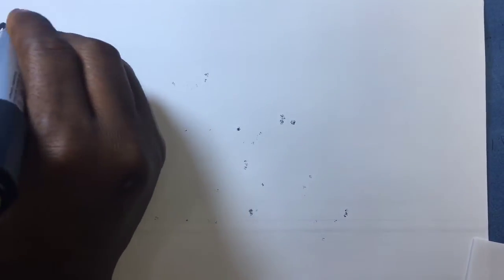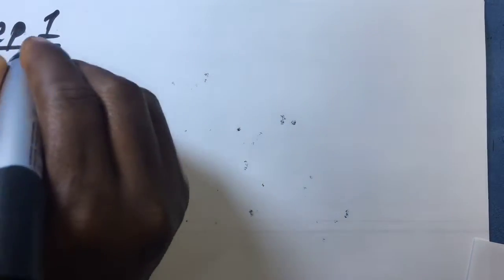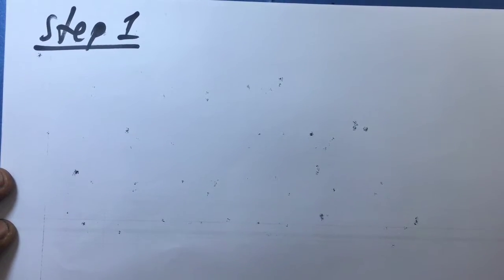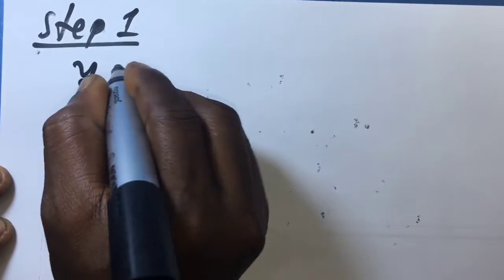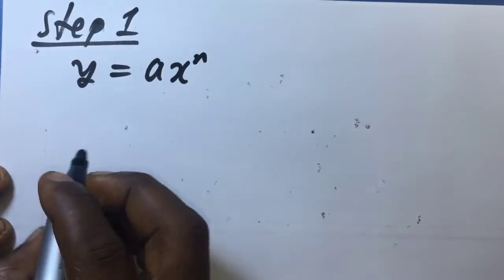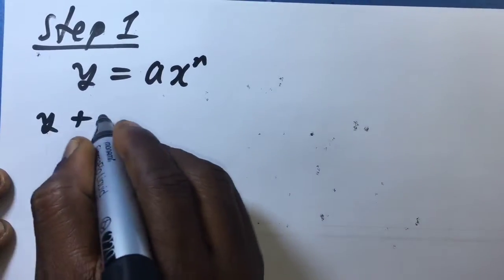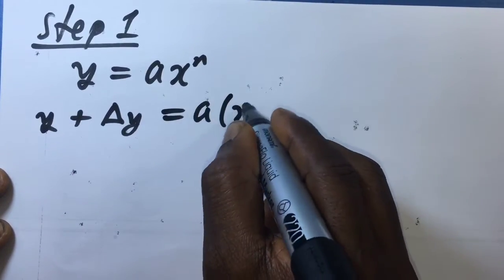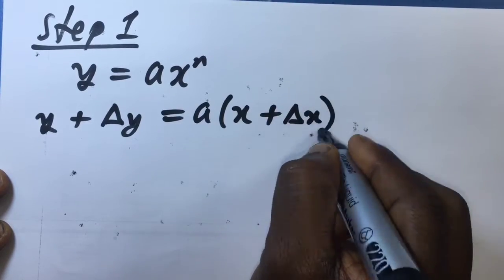Step 1 requires us to obtain delta y — the increment in y. An infinitesimal increment in y would only come from an infinitesimal increment in x. We are given y equals ax raised to the power n. So if y changes by an infinitesimal delta y, this must have come from an infinitesimal change in x.